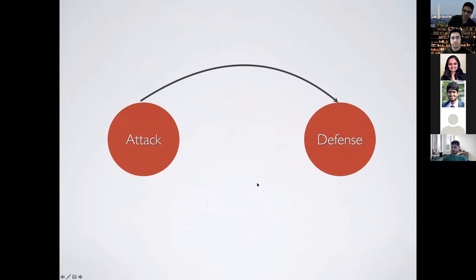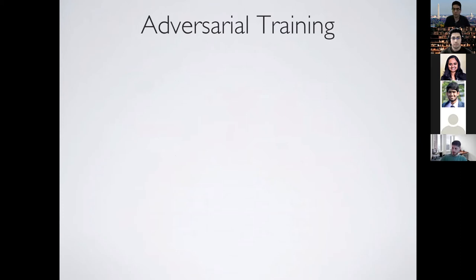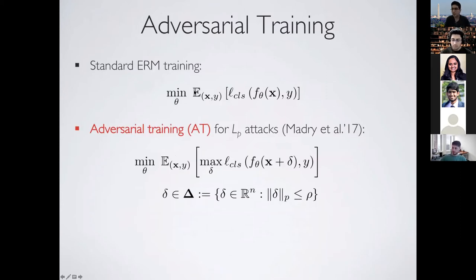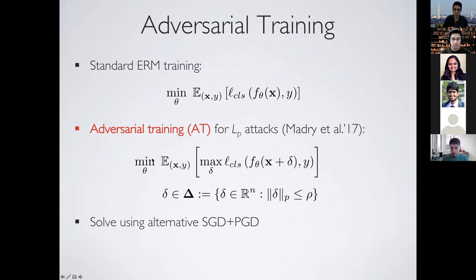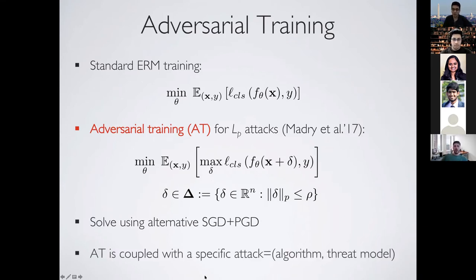Turning to defenses: one really popular defense is adversarial training. In standard ERM, we pick model parameters that minimize the average training loss, but in adversarial training we minimize the average training loss not on training samples, but on worst-case perturbations of training samples. A good feature of adversarial training is that you can plug in different threat models for the inner maximization problem.